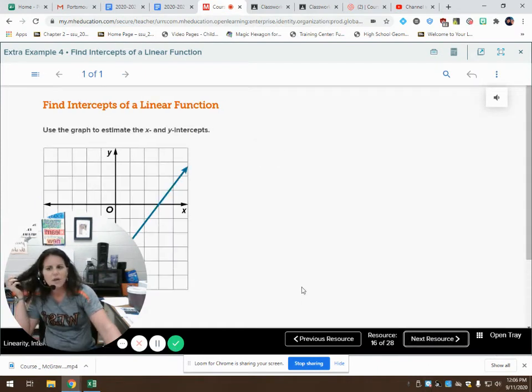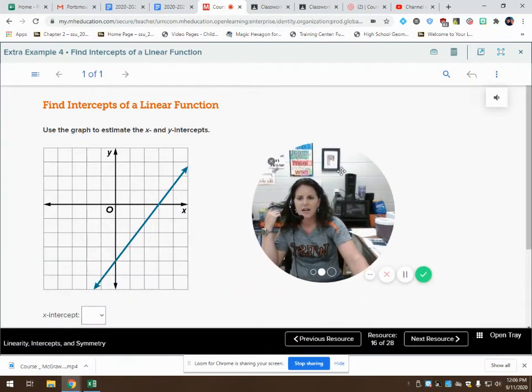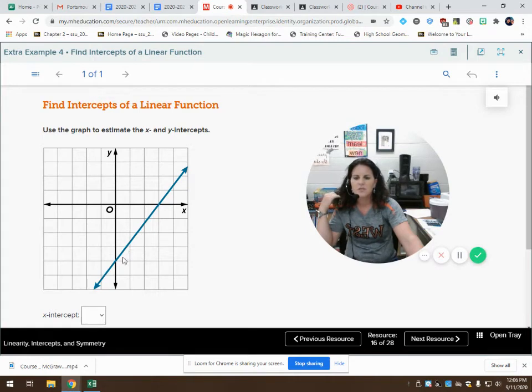Let's find the x and y intercepts looking at the graph here. This one's a little bit different. We can see that here on our y axis, my blue line crosses at negative one, negative two, negative three, negative four. So my y intercept would be negative four.